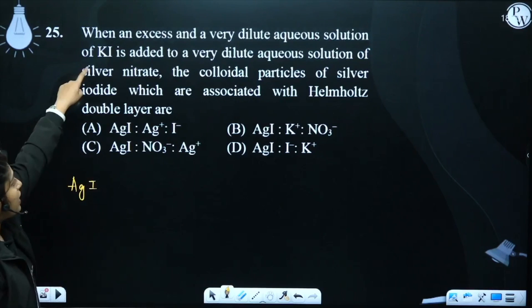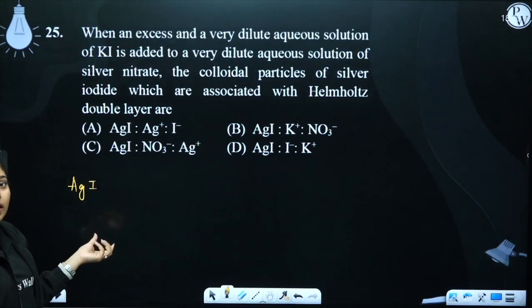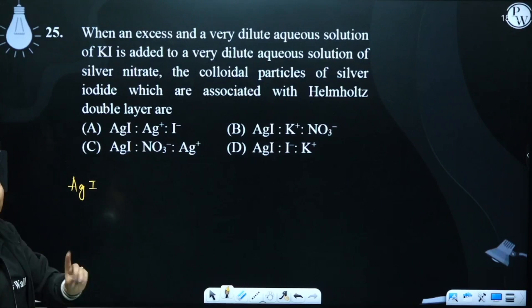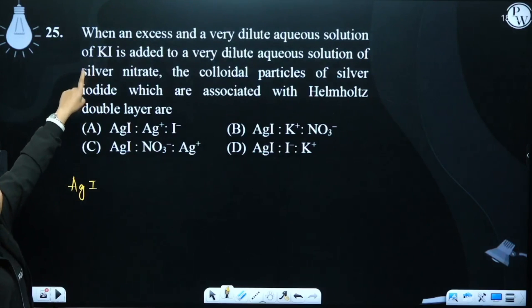Now, which is in excess? KI and AgI. Which is a common ion? Because the common ion has preferential absorption. So AgI and the excess of KI, who will absorb?